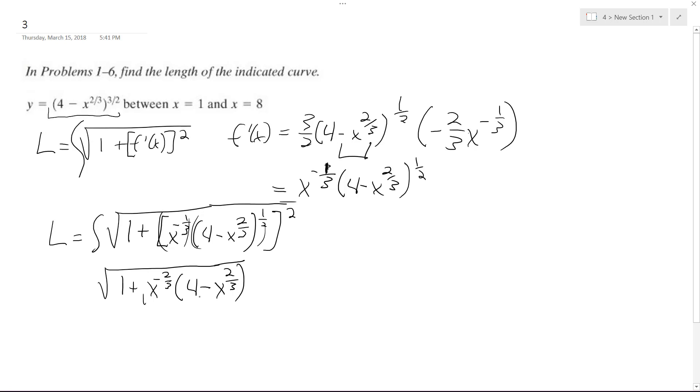And ultimately what that ends up being is, so we distribute this, we end up with 1 plus 4 x raised to the negative 2 thirds, and then minus, and then this.